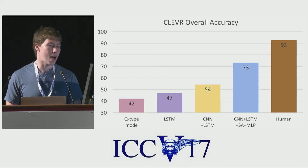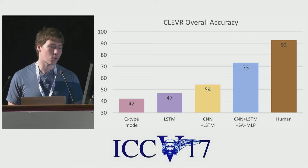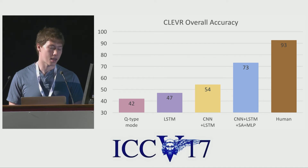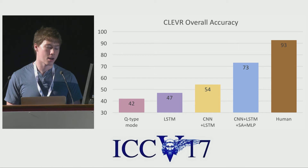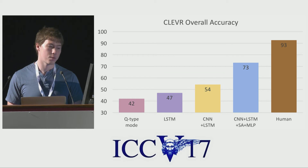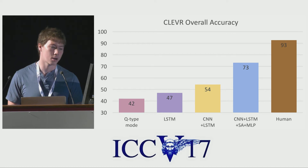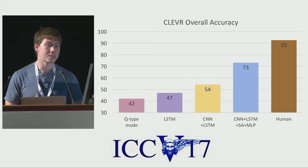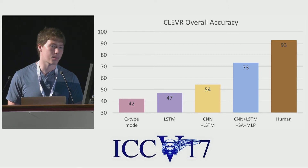Now due to the compositional and complex nature of the questions in the CLEVR dataset, traditional static deep learning architectures don't perform very well. We tested some baseline models, including an LSTM, a CNN plus LSTM, and another model that includes multiple rounds of stacked spatial attention. When we evaluate these methods on the CLEVR dataset, we see a pretty huge gap between the model performance and the performance of humans on Mechanical Turk. So we probably need to do something differently in order to attack these complex compositional questions.